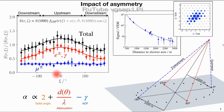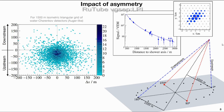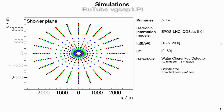Why does this matter? We use the lateral distribution function to get the shower estimator, so if a station is downstream or upstream, it can have a signal that is say 20% higher or lower depending on position in the shower plane. This can influence reconstruction. If you don't account for these asymmetries and run a reconstruction assuming a radially symmetric LDF, you shift the shower core — for an Auger-like array at energies 10^18.5 and above — by about 40 meters in the upstream direction, because the reconstruction mistakes higher signal for being closer to the shower axis.